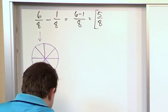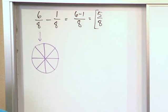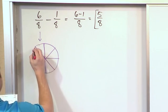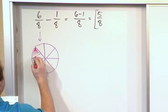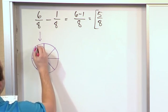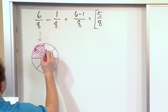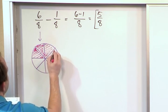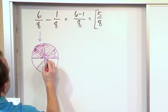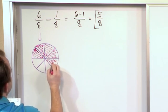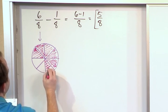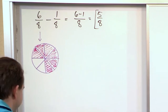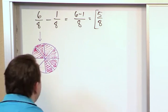Now for that fraction, for that particular 6 eighths, each section is a piece. I count out 1, 2, 3, 4, 5, and 6. So there are 6 eighths of a pizza, or 6 eighths of a pie.